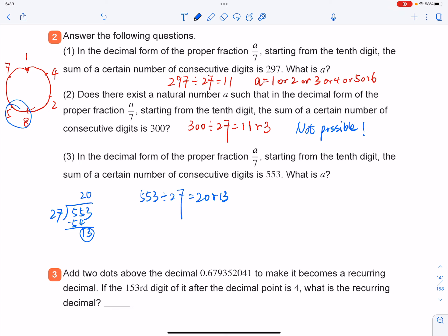So which number divided by 7, the first digit after the decimal point will be 8? I think that'll be 6, right? 6 over 7 equals to 0.8 something. So that's going to work.